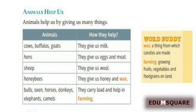Animals are very helpful for us. Animals help us by giving us many things. Cows, buffaloes and goats give us milk. Hens give us eggs and meat. Sheep give us wool. Honey bees give us honey and wax — wax is the material from which candles are made. Bulls, oxen, horses, donkeys, elephants and camels carry loads and help in farming. Farming means growing fruits, vegetables and food grains on land.